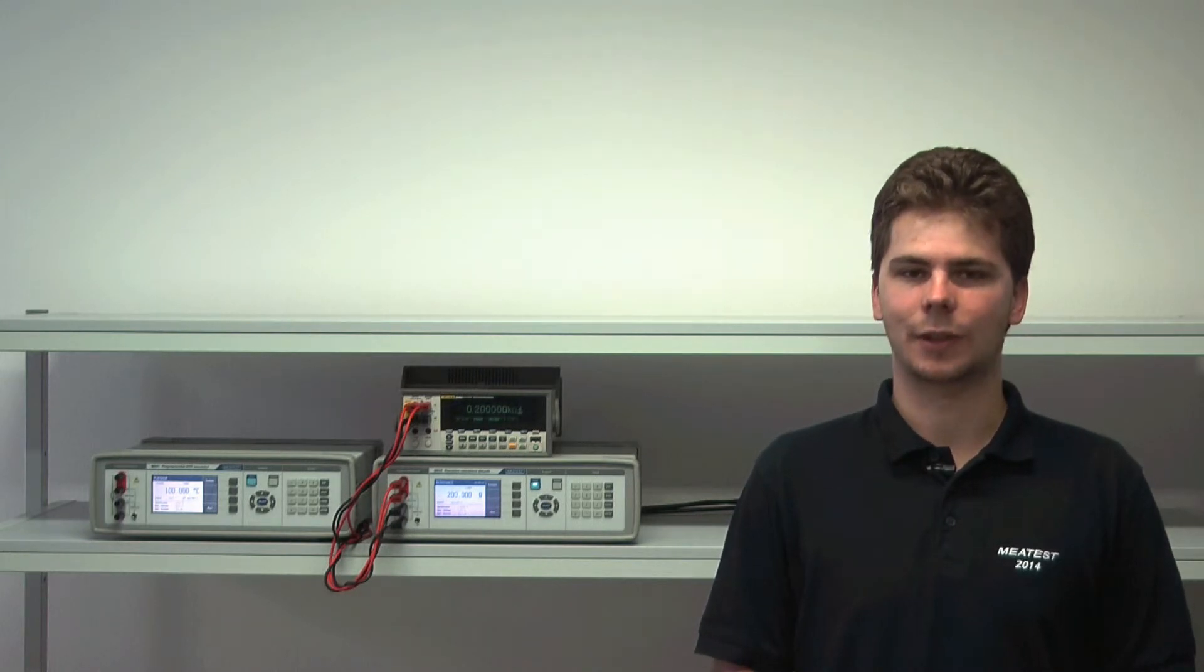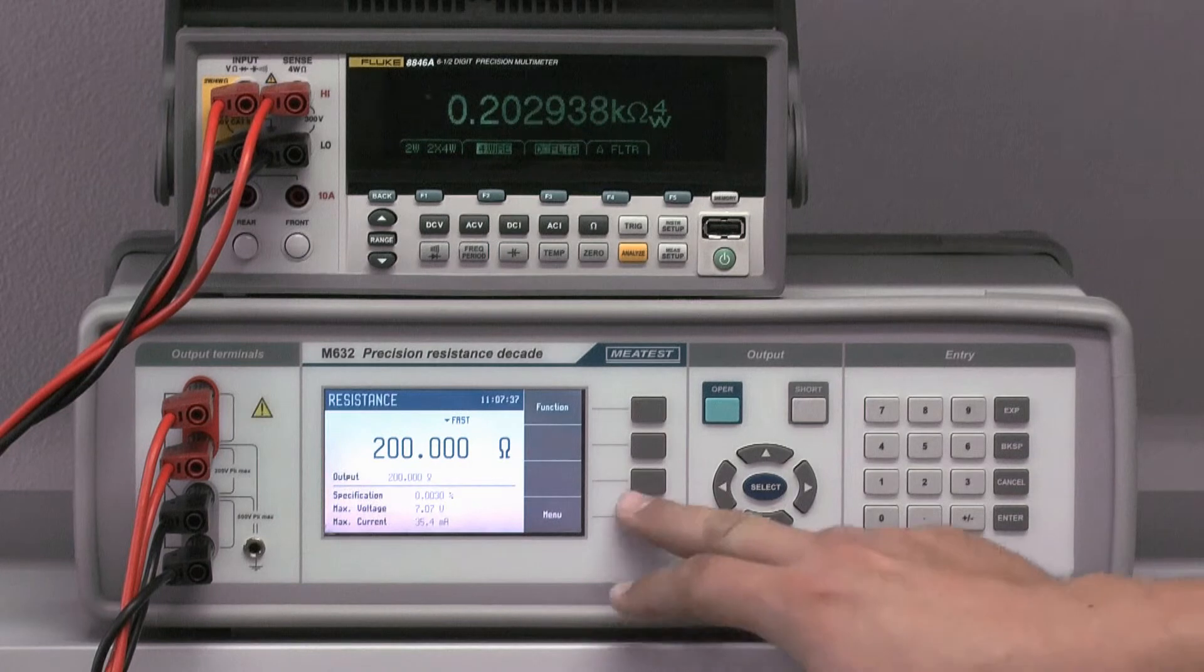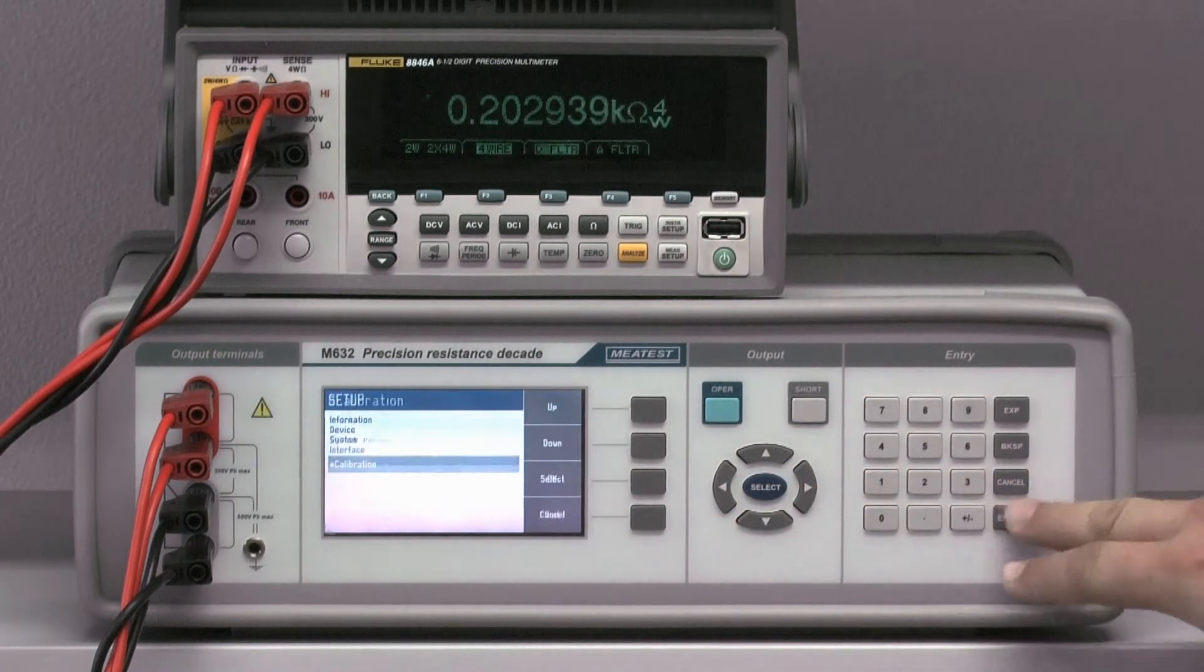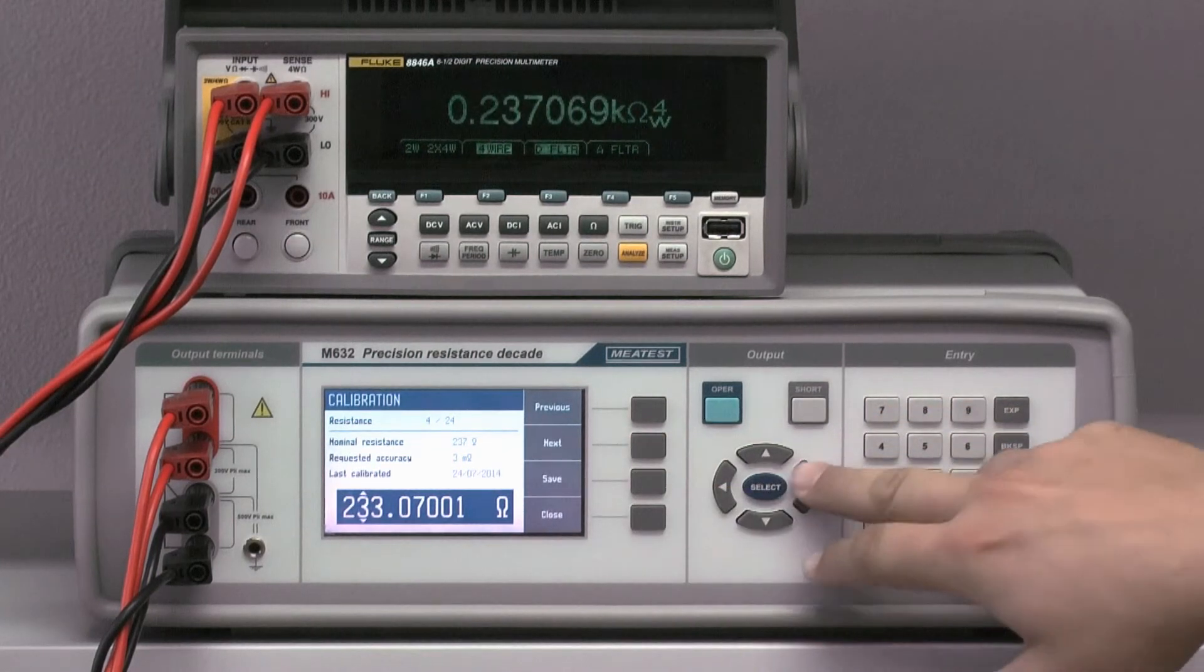Luckily though, this is thing of the past. The M600 series is capable of simple recalibration, a feature completely unknown to other manufacturers. Simply as that, you can adjust values of the internal resistors, restoring it to brand new conditions and thus keeping the costs low.